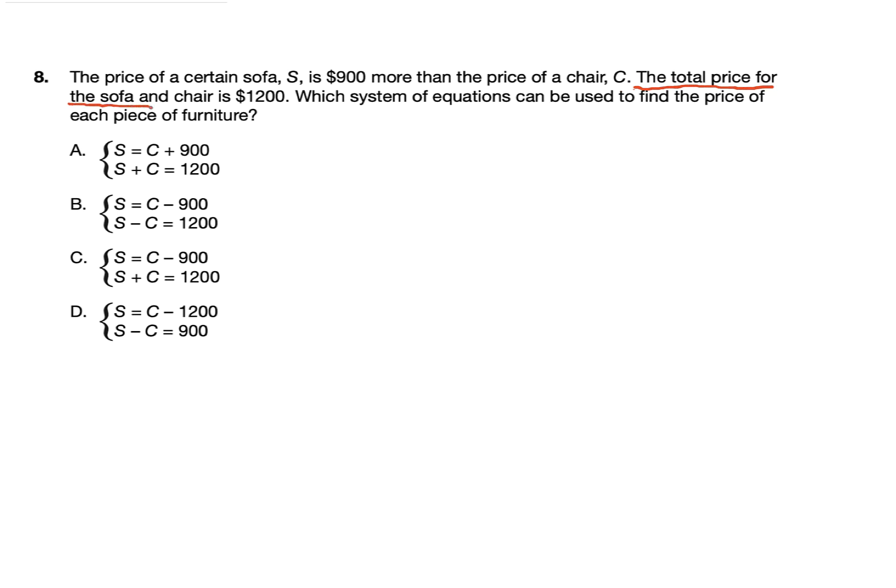Each sentence here describes how we should model our equation. I'm going to start with the easiest sentence. The total price for the sofa and the chair is $1,200. The sofa is S and the chair is C. Please pay attention to the variables they apply to the item. The total means to add, so S plus C. The word is represents your equal sign, so $1,200.